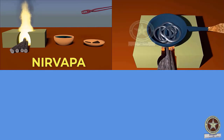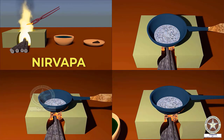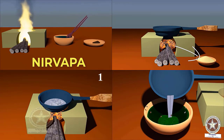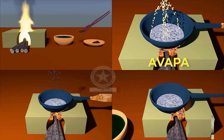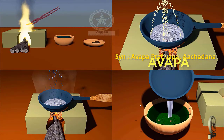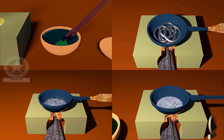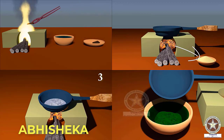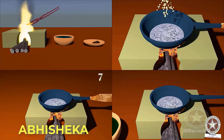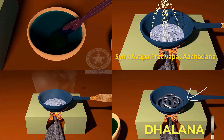Comparing the four procedures: Nirvapa is a process in which metal is heated to red hot and dipped in liquid media. Avapa is a process in which metal is heated till it melts and other dravyas like apamarga churna or haridra churna are added to it in molten state. Abhisheka is a procedure where metal is heated completely to molten state, waited for 8 seconds, and then water is sprinkled to it. Dalana is a procedure where metal is heated to molten state and the molten metal is dipped into liquid media.